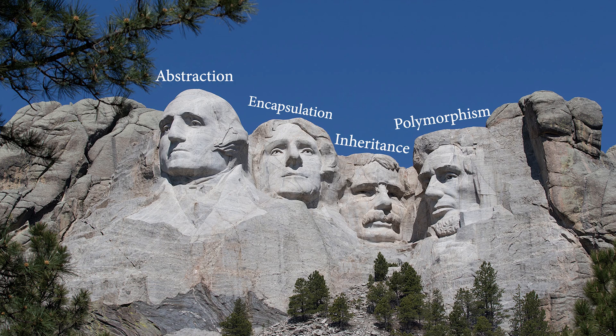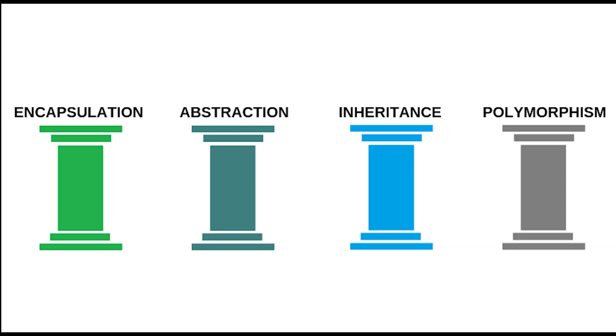So the four pillars are: abstraction, polymorphism, inheritance, and encapsulation. Now we will talk about the first pillar. The first pillar is abstraction.